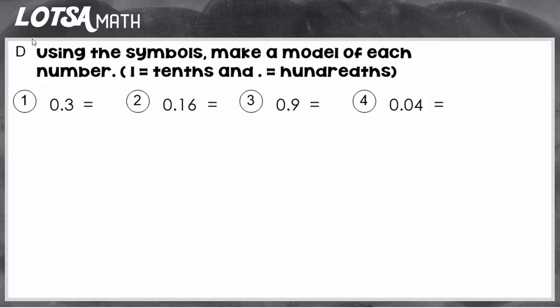On number 1, we have the number 3 tenths. So the directions say use a straight line to represent tenths and a dot to represent hundredths.